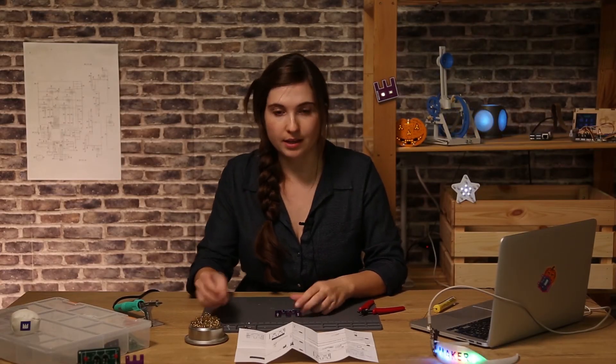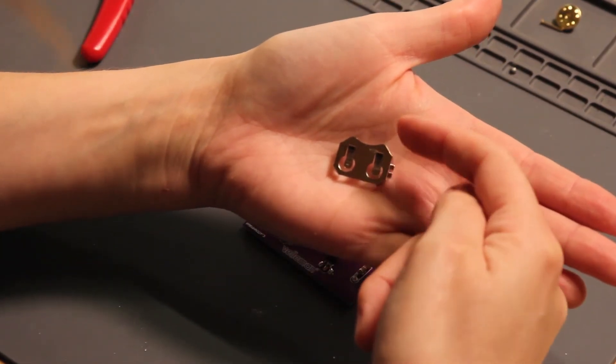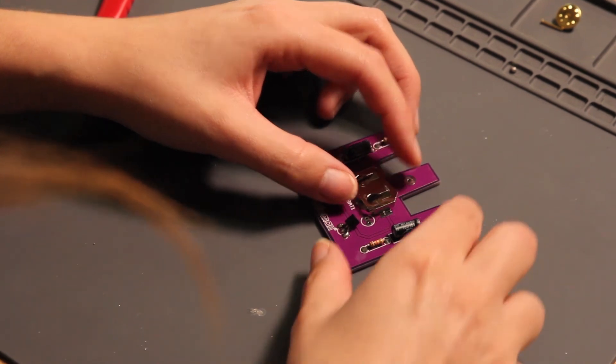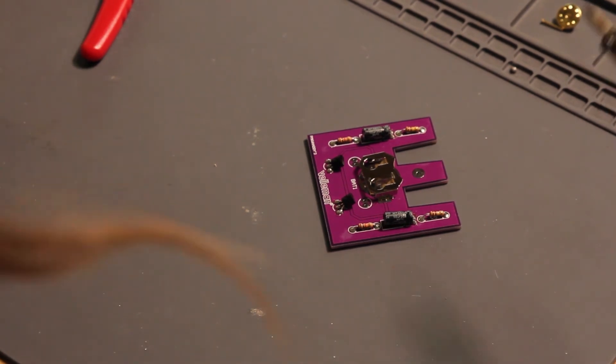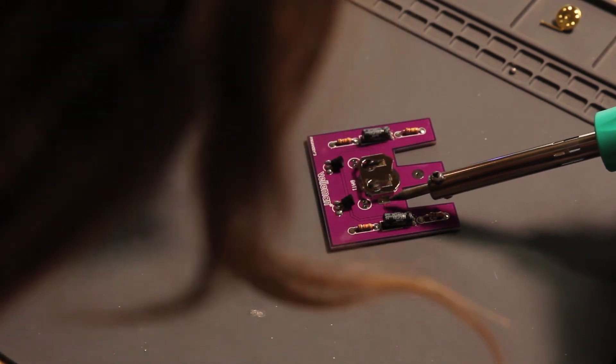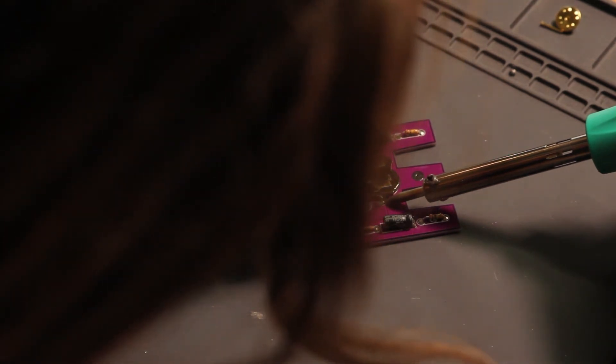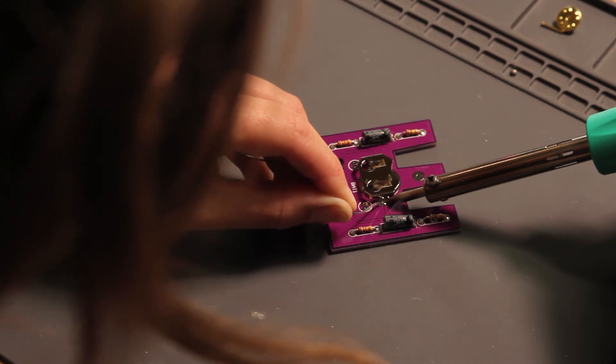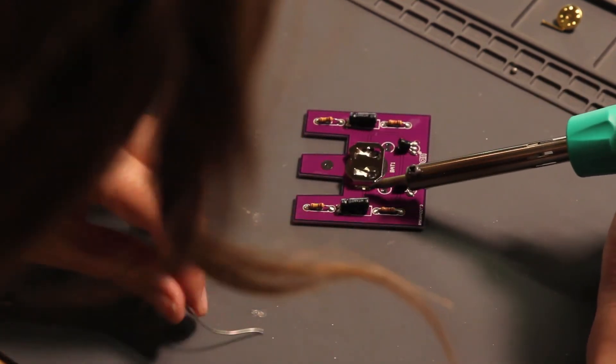The next component is our battery holder. As you can see, the battery holder has a top side and a bottom side. We're going to place the battery holder like this and then we need to solder both sides.